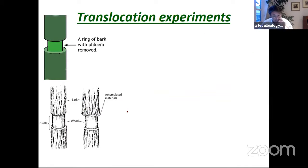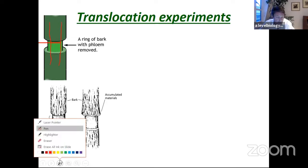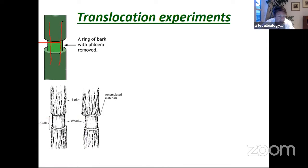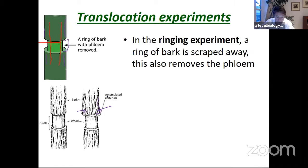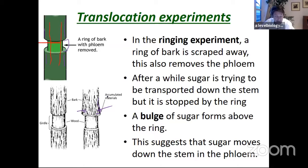Translocation experiments: ringing experiments prove that sugar moves in the phloem. When you remove a ring of bark from a stem, the xylem remains intact because it's deeper in the stem, but you cut through the phloem. You see an accumulation of photosynthesis products as a bulge of sugars above the ring, suggesting that sugar moves down the stem in the phloem.